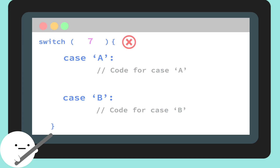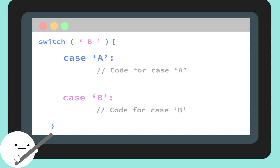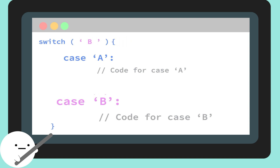Once we have a value in the parentheses, the program will jump to the case that has the same value as the one in our condition. So if your value is equal to 'b', then your code will jump to case b.